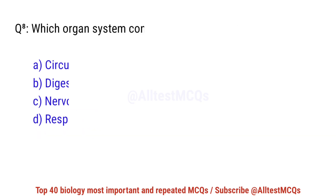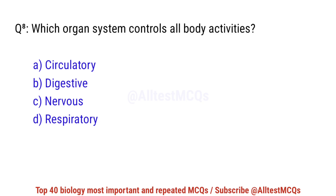Question number 8. Which organ system controls all body activities? The correct option is C: Nervous system.